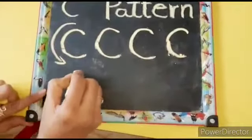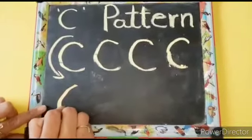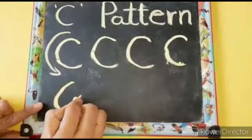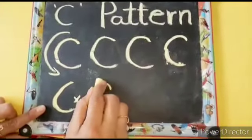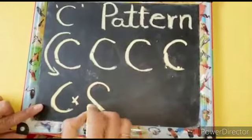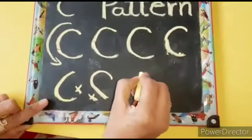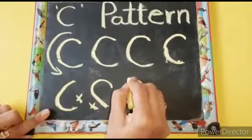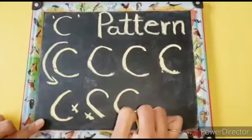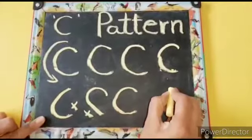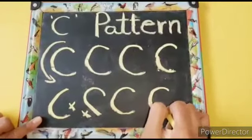Children, do not write a slant line and a curve — that is a wrong pattern. Or a curve ending with a slant line — that is also wrong. So write it properly: give a proper curve to the left side, come down and complete the curve.